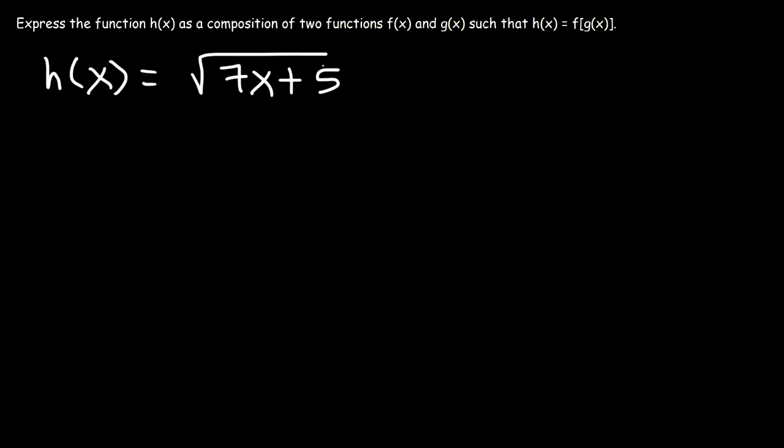The stuff on the inside is 7x plus 5, so that's going to be g of x. The stuff on the outside is the square root symbol, and that's going to be f of x. So, f of x is the square root of x.